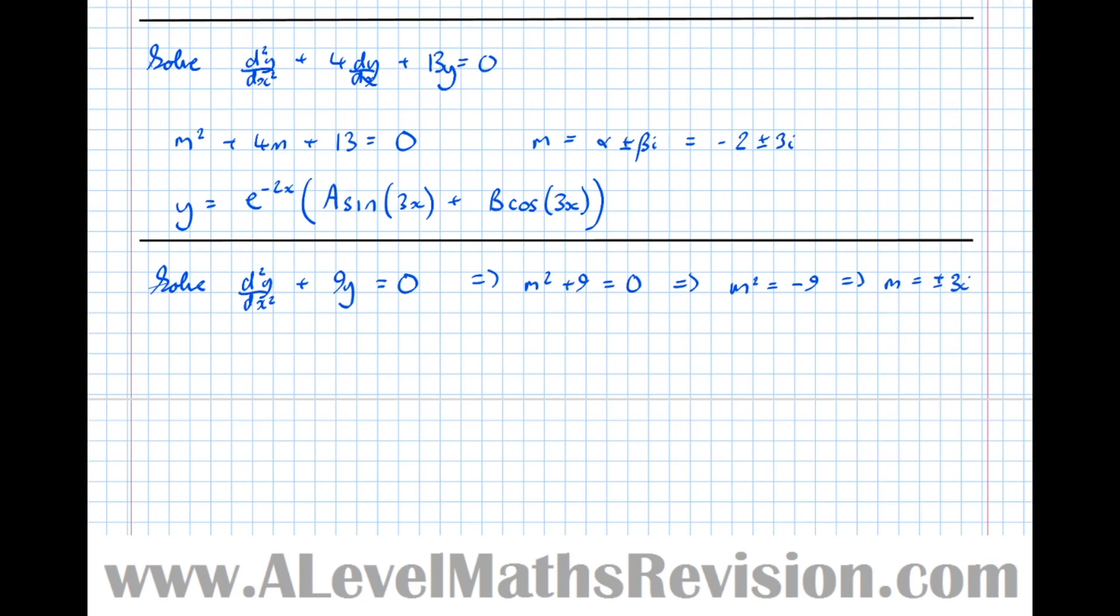So here we've got α ± βi. Well, here α, the real part equals 0, and β = 3. Therefore, y = e^(0x), e^0, sine of 3x plus a sine of 3x, rather.